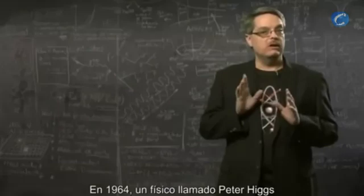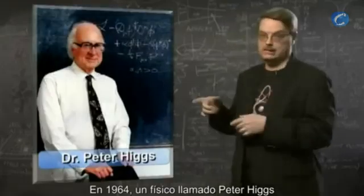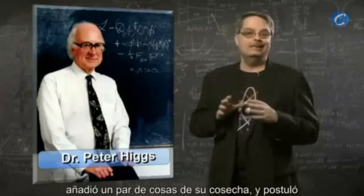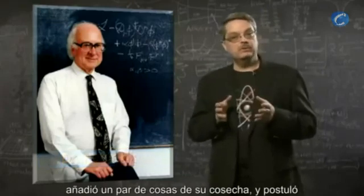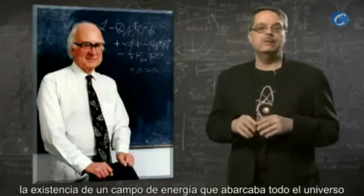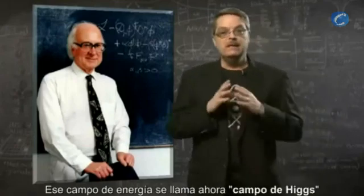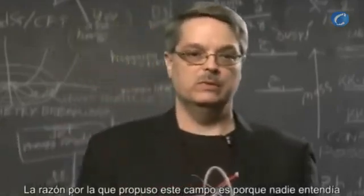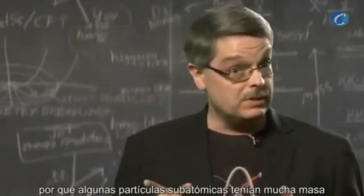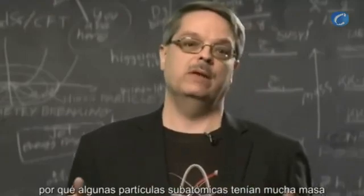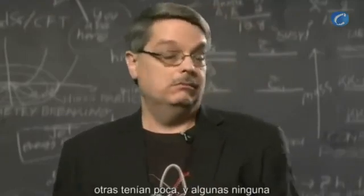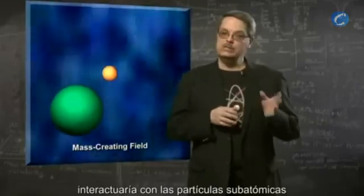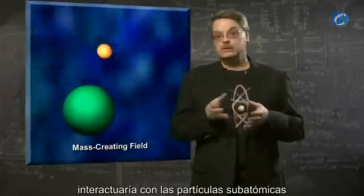In 1964, a physicist by the name of Peter Higgs took some ideas that were floating around at the time, added an insight or two of his own, and proposed that there was an energy field that permeated the entire universe. This energy field is now called the Higgs field. The reason he proposed this field was that nobody understood why some subatomic particles had a great deal of mass, while others had little, and some had none at all. The energy field that Higgs proposed would interact with the subatomic particles and give them their mass.